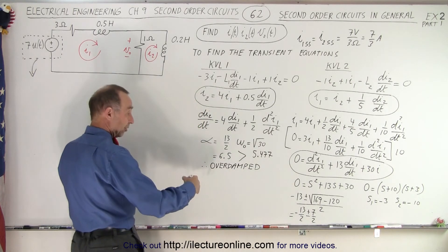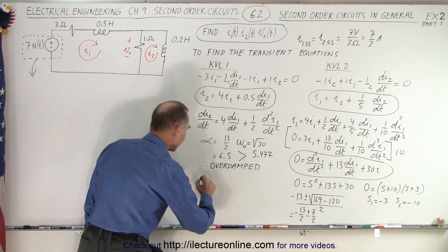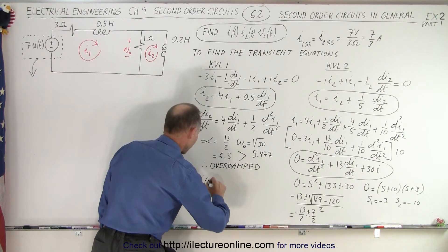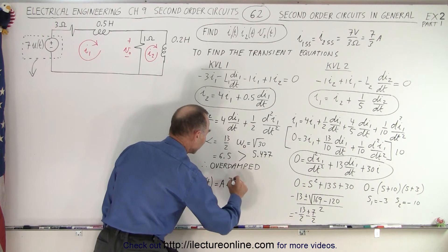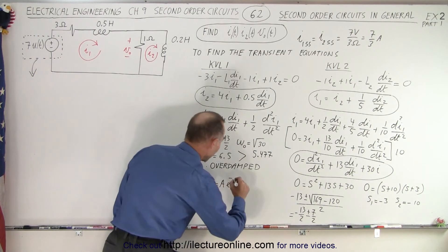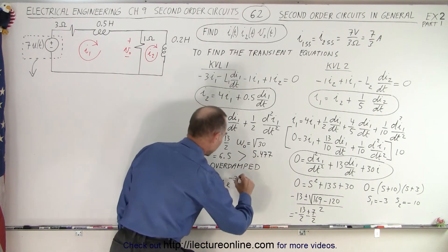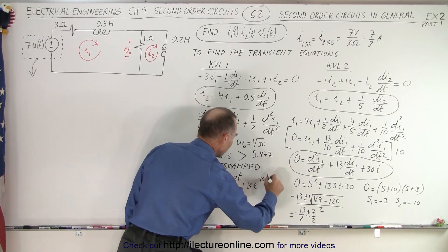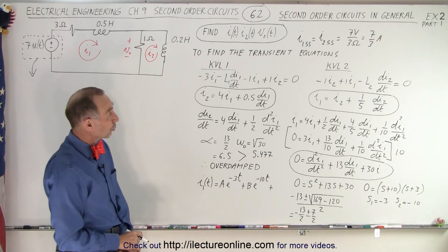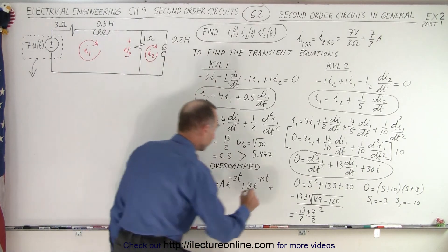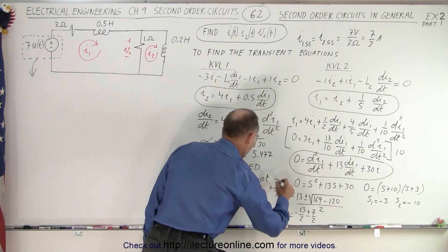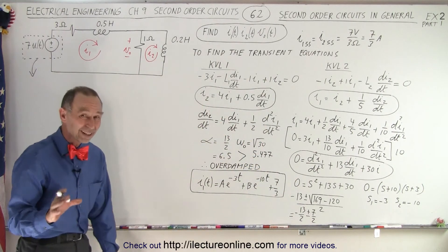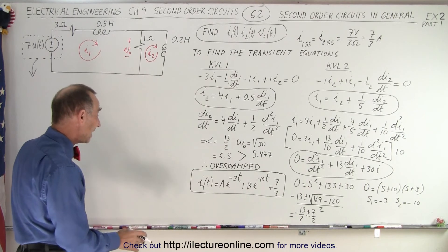Since it's overdamped, the general equation for the current as a function of time is: I(t) = A·e^(−3t) + B·e^(−10t) + 7/3, where 7/3 is the steady-state current for I1. We still need to find the values for A and B.